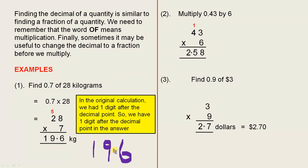The 6 is the digit that's after the decimal point and there's only one of them. In the original calculation we had one digit after the decimal point, so we have one digit after the decimal point in the answer, and that's why it's 19.6 kilograms.